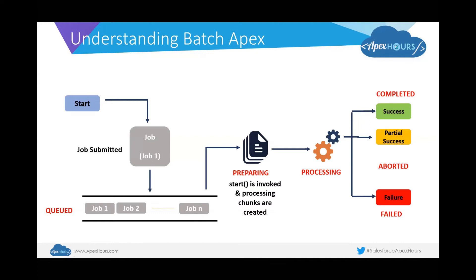Each part of the batch job — one batch job could have multiple chunks — is termed as a 'batch'. That's the reason this process is called batch jobs, because the complete scope of records to be processed is broken down into intermittent batches. You can specify what the batch size is — there is a min and a max. Each chunk can have at max 2,000 records. Once the chunking happens, the processing begins based on logic written in the execute method.